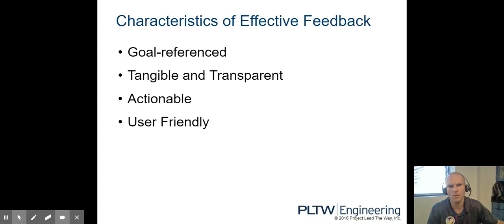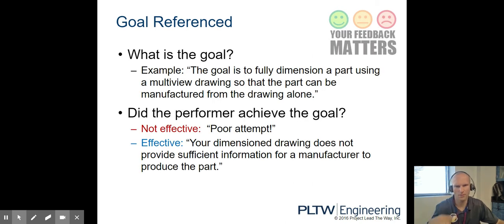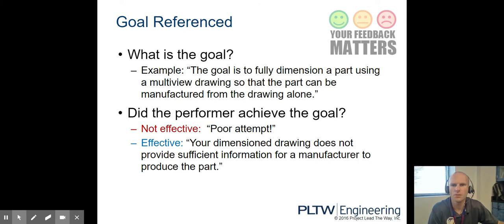We're going to look at some instances of correct feedback and what is not effective. So what is the goal example? The goal is to fully dimension a part using a multi-view drawing so that the part can be manufactured from the drawing alone.